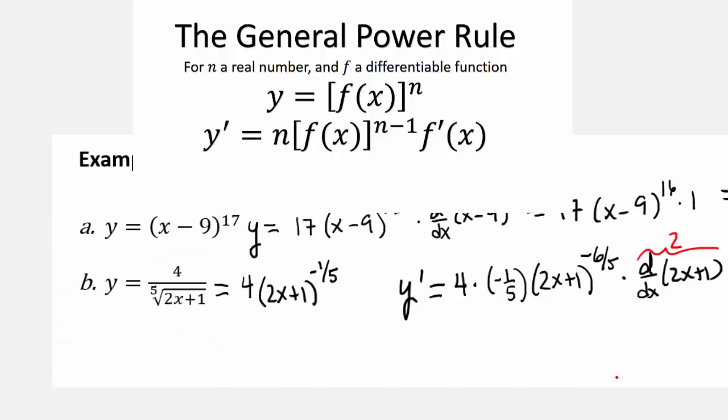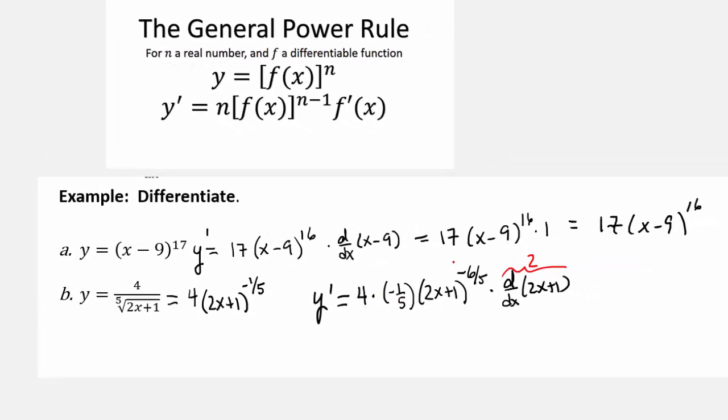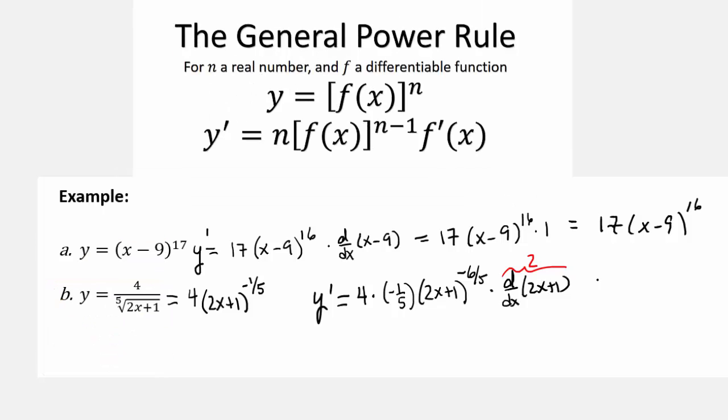That's right. So multiplying 4 times 2 times negative 1 fifth, that's going to be negative 8 fifths, right? So bringing this into the denominator, this is going to be negative 8 over 5 times 2x plus 1 to the 6 fifths.